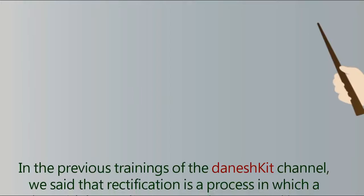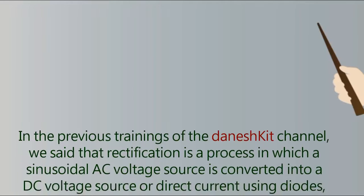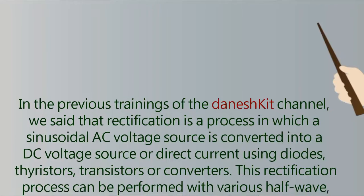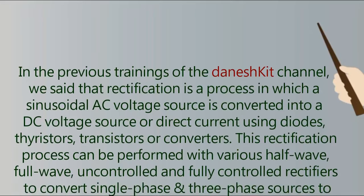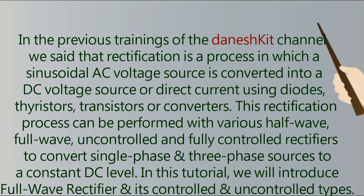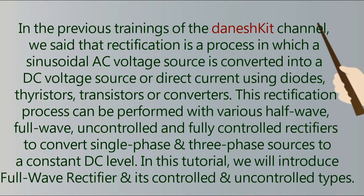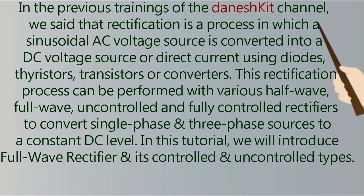In the previous trainings of the Danish kit channel, we said that rectification is a process in which a sinusoidal AC voltage source is converted into a DC voltage source or direct current using diodes, thyristors, transistors, or converters. This rectification process can be performed with various half-wave, full-wave, uncontrolled and fully controlled rectifiers to convert single-phase and three-phase sources to a constant DC level.